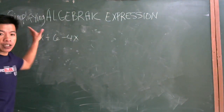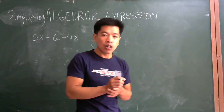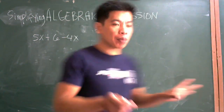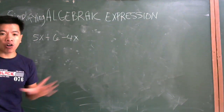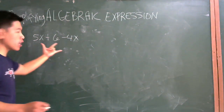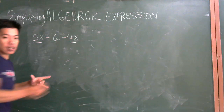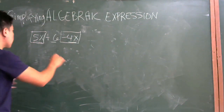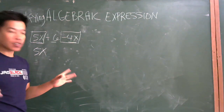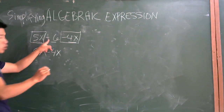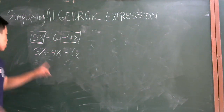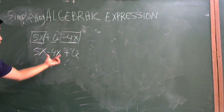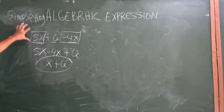Simplifying algebraic expressions. How will we simplify an algebraic expression? What you will do is combine like terms and complete all the operations needed. For example, we have 5X plus 6 minus 4X. We have like terms: 5X and negative 4X. So you combine like terms: 5X minus 4X equals X, because 5 minus 4 is 1. Then copy the variable X and add plus 6. So the simplified expression is X plus 6.